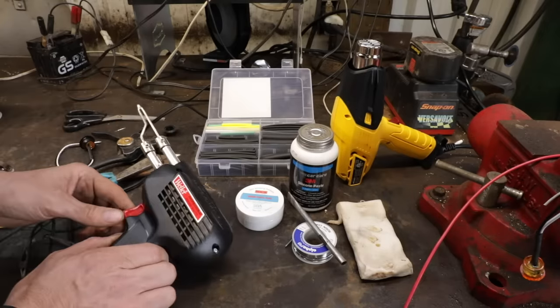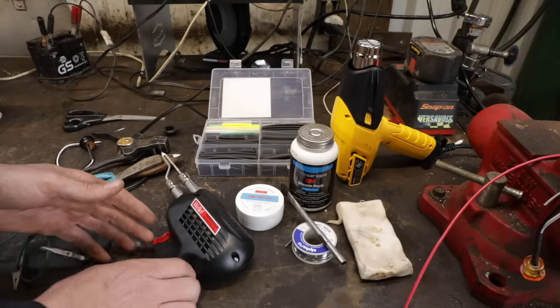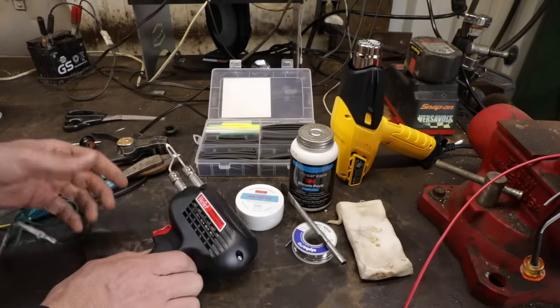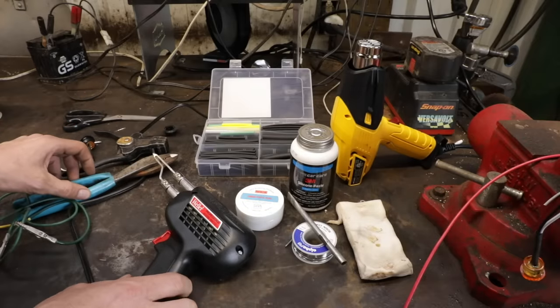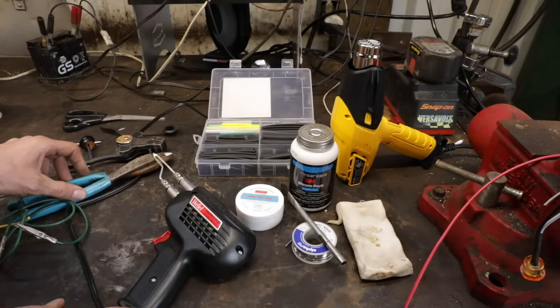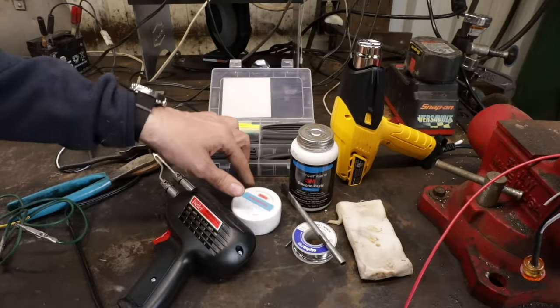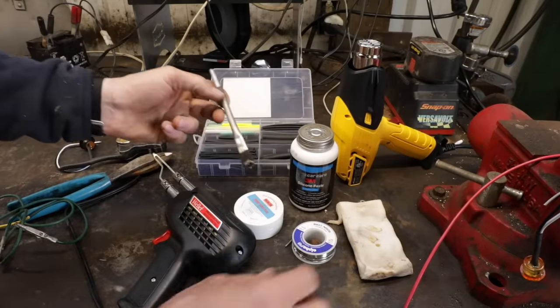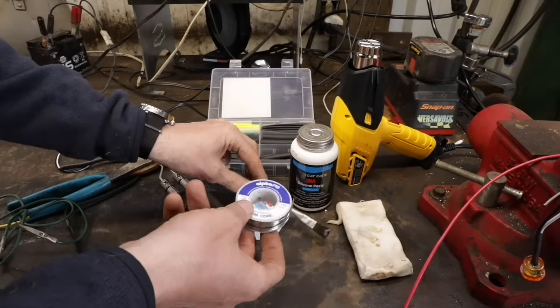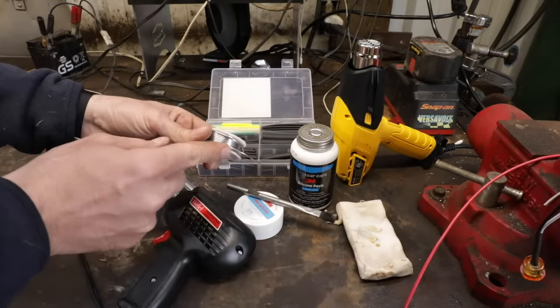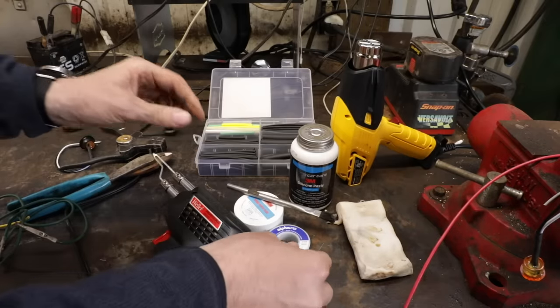Just get yourself a soldering gun. You don't have to get anything fancy. These Wellers are good. They're probably in the $30, $40 range. Not very much. You want some rosin paste flux, a little brush, and some rosin core solder. You don't want to use the solder you use for plumbing. It's not the right stuff.